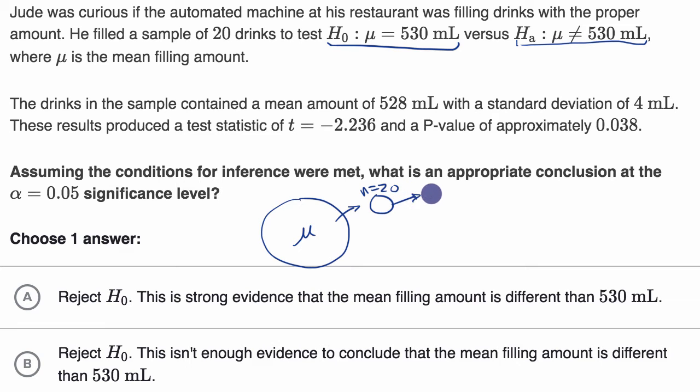Using that sample, you calculate a sample mean and you also calculate a sample standard deviation. They tell us these things right over here. And then using this information and our sample size, you're able to calculate a t-statistic. And then using that t-statistic, you are able to calculate a p-value.